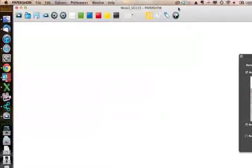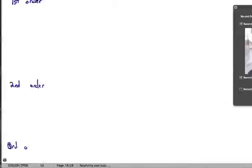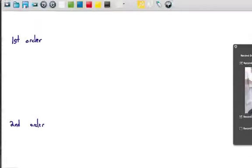For each of the common rate laws, we have our first order reaction. We have our second order reaction. Sorry, zeroth order. These are the three most common types of rate laws we're going to see.